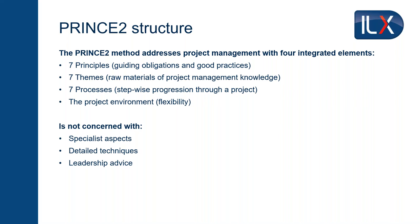Seven themes are the raw materials of project management knowledge. For any of you who've worked in projects, you will have done some, if not all, of the seven themes — they are the common basic tools of project management. Then the processes: stepwise progression, a route map. How do I get from the start of a project to the end? The purpose of the process map is to link the principles — what do you do — the themes — how do you do it — and the direction of documentation, what do I write down to tell me what I've done and what I intend to do next.